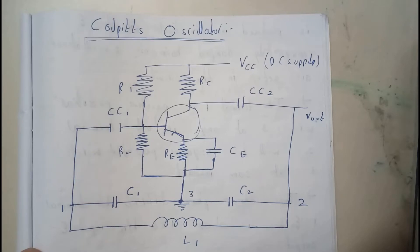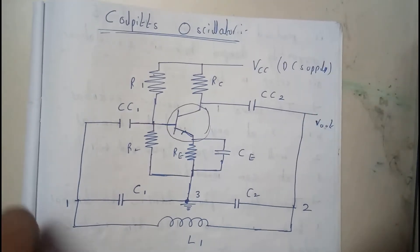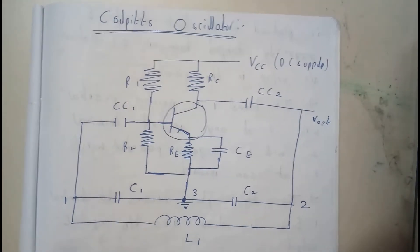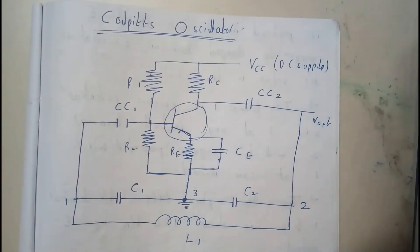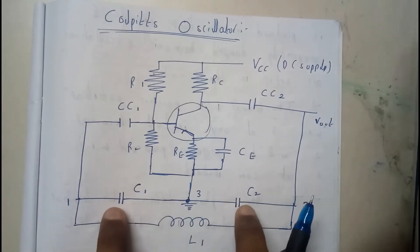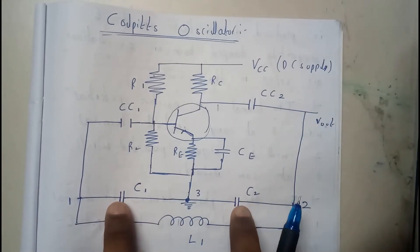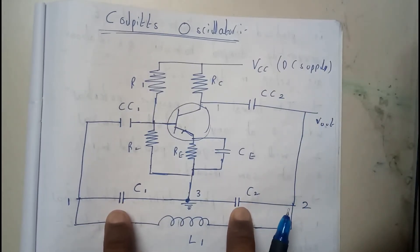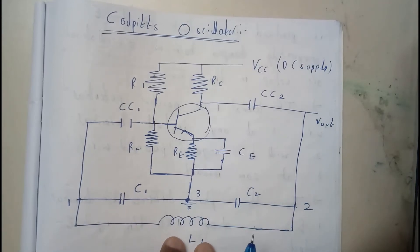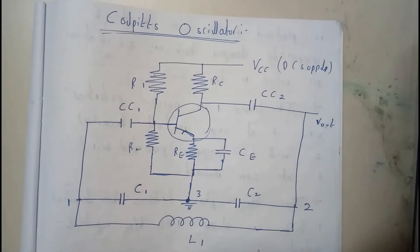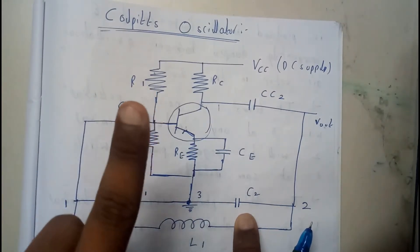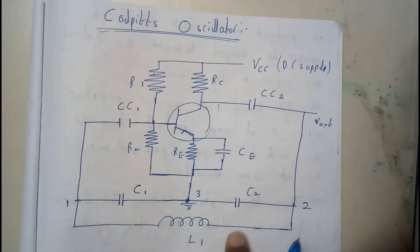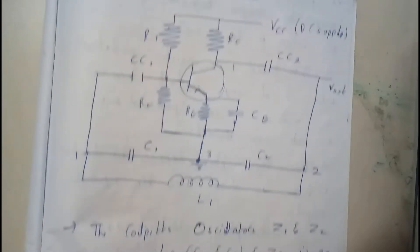So in this tutorial we will be going through Colpitts Oscillator. In the previous tutorial we have gone through Hartley Oscillator. So basically if you see the diagram it is perfectly similar to Hartley whereas here they are inductors and here in that it is capacitor. So these 2 are interchanged and here we are having 2 capacitors and 1 inductor. So now let us go through the main points of Colpitts Oscillator.